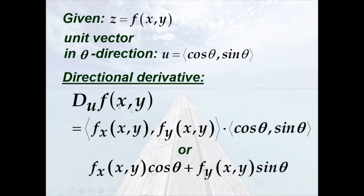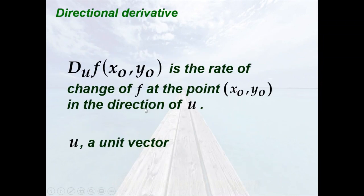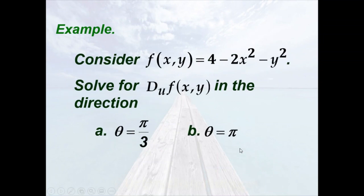If we evaluate this directional derivative at the point (x₀, y₀), that is just the rate of change of f at the point (x₀, y₀) in the direction of u, where u is a unit vector. Now, let's consider an example.